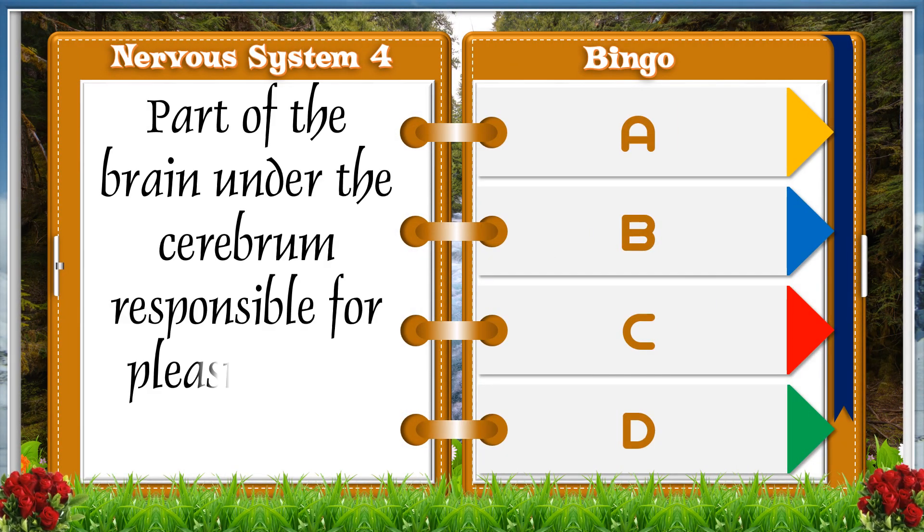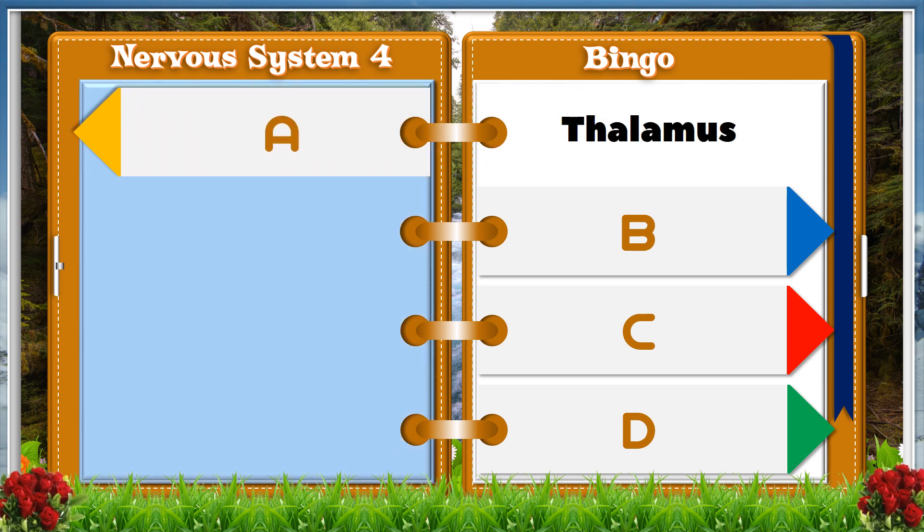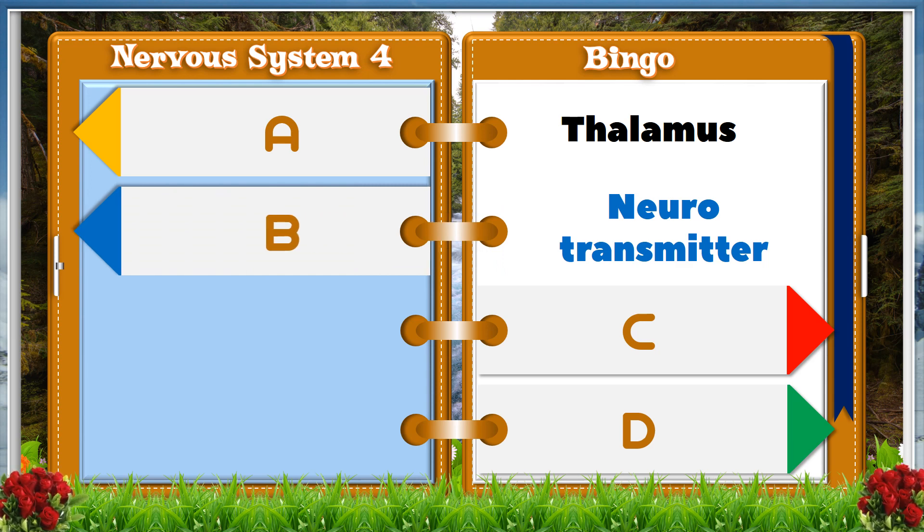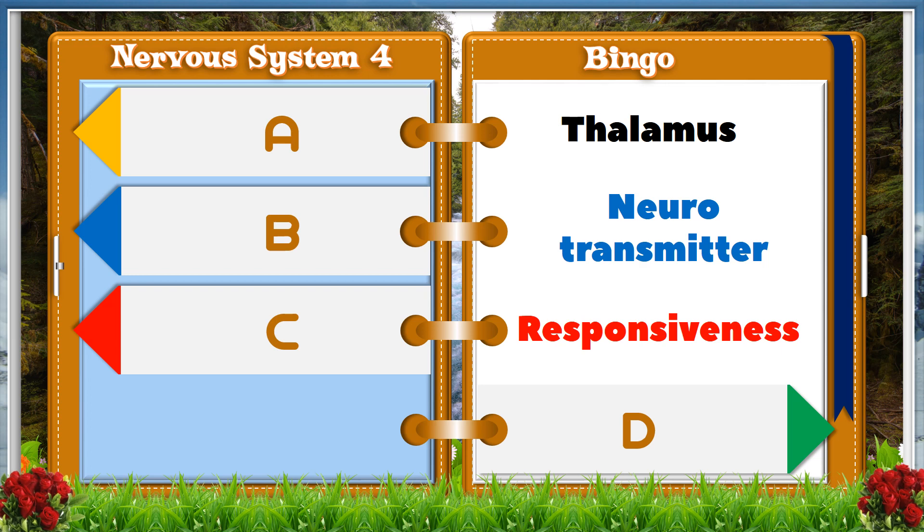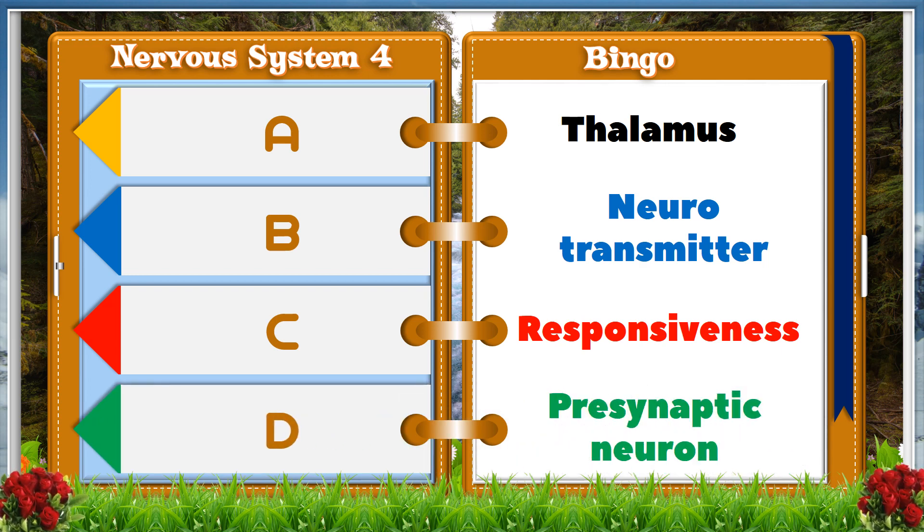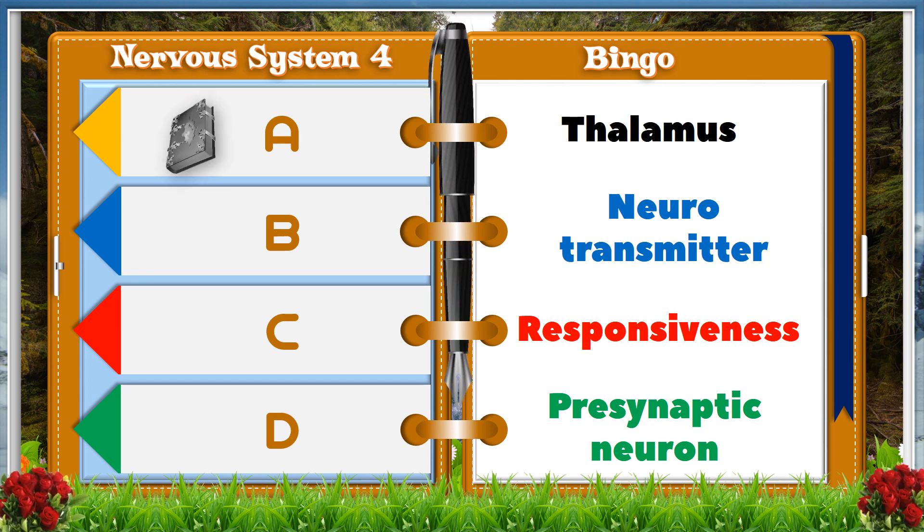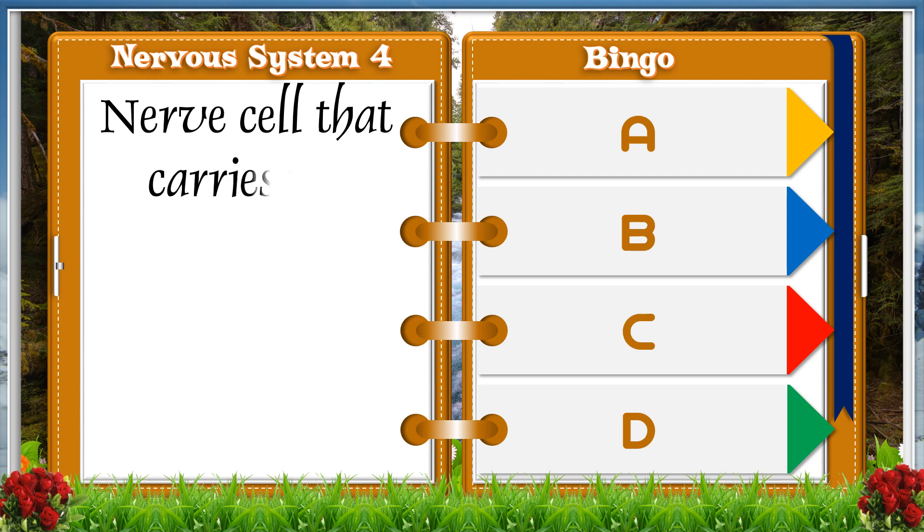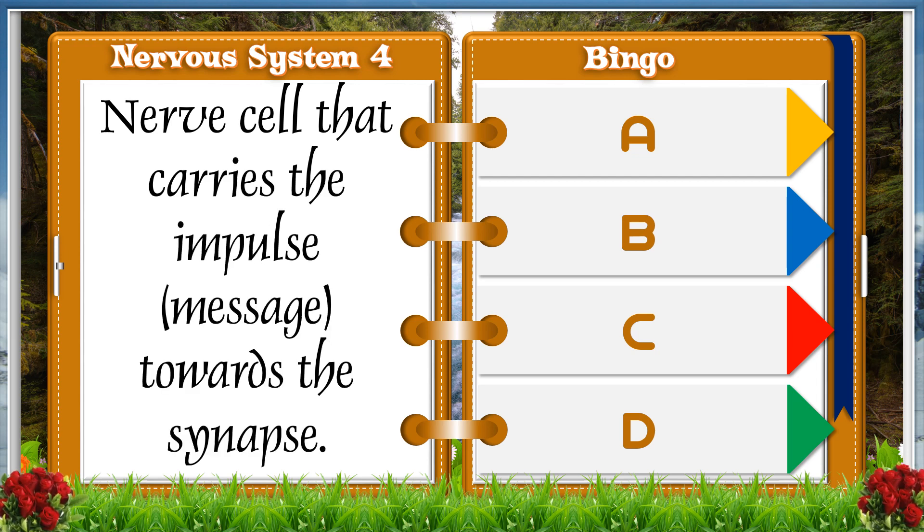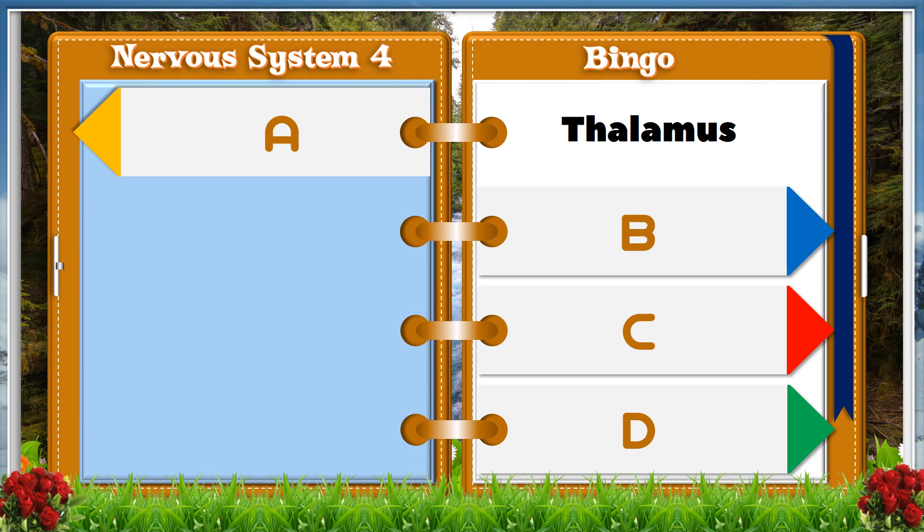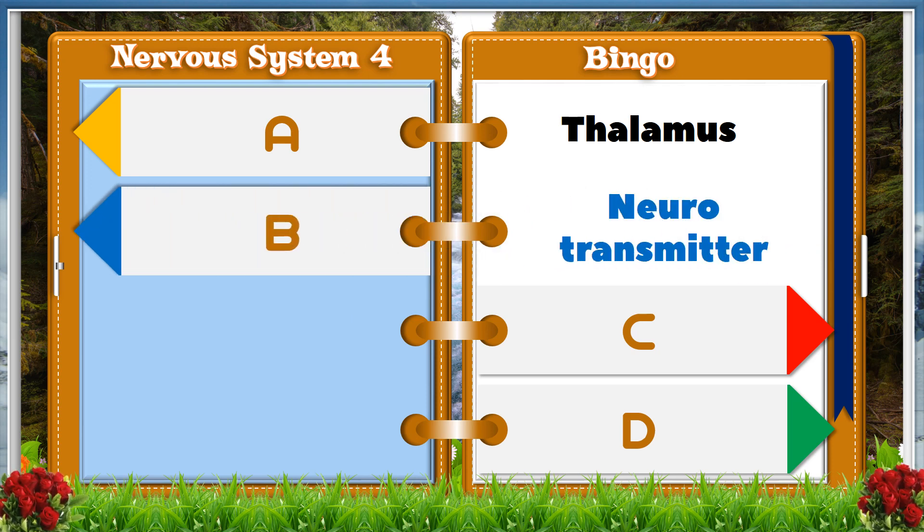Part of the brain and the cerebrum responsible for pleasure and pain. A. Thalamus. B. Neurotransmitter. C. Responsiveness. D. Pre-synaptic neuron.